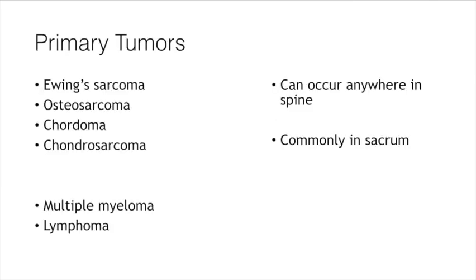Shifting gears to primary malignant tumors — these are less common but important to know. They include Ewing sarcoma, osteosarcoma, chordoma, and chondrosarcoma. Whether multiple myeloma or lymphoma fit into this category is debatable, but they are treated somewhat differently. These can occur anywhere in the spine, most commonly in the sacrum.